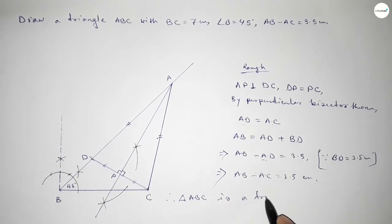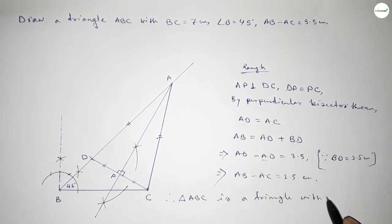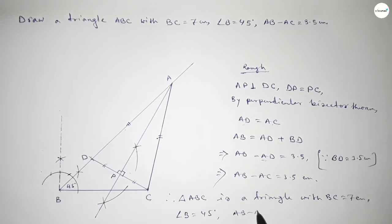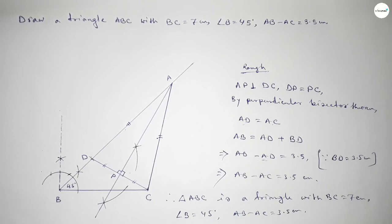Therefore, triangle ABC is a triangle with BC equal to 7 centimeters, angle B equal to 45 degrees, and AB minus AC equal to 3.5 centimeters. That's all — thanks for watching.